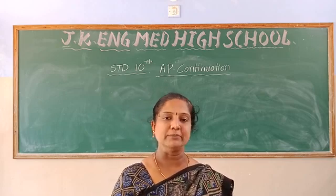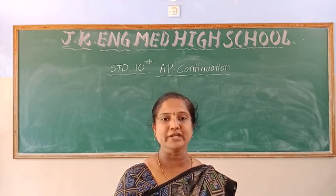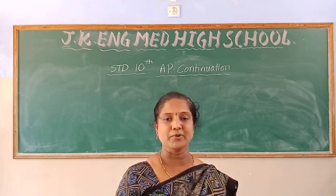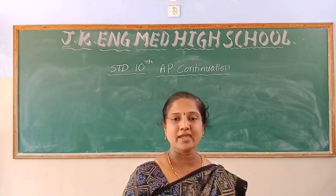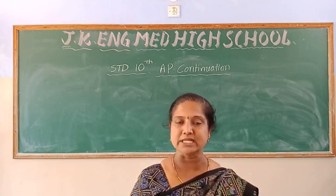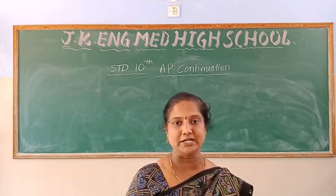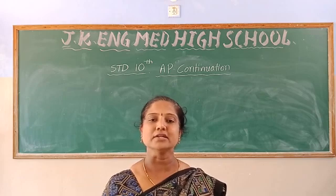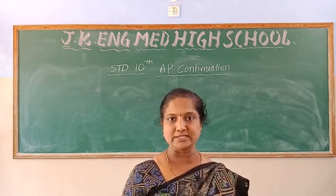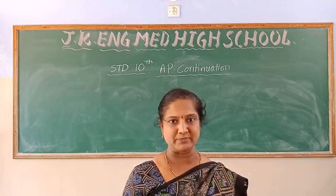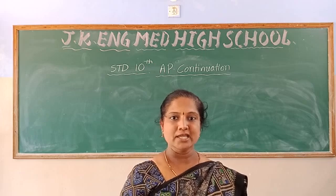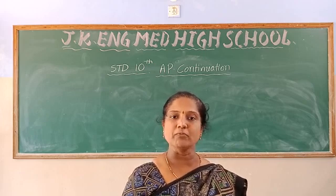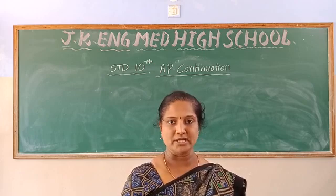Children, tell me what is the general form of an AP? The general form of an AP is a, a plus d, a plus 2d, and so on. The nth term of an AP is a_n = a plus (n minus 1) into d. This third main we have to solve by using these two formulas.